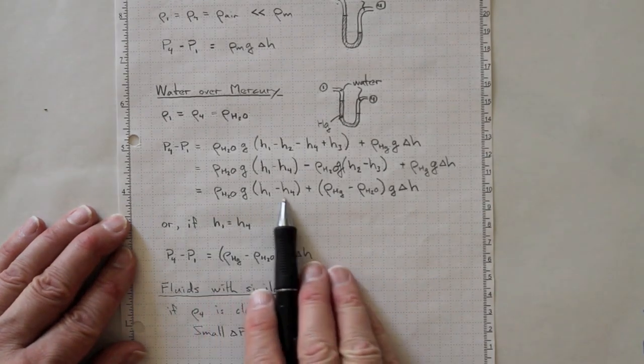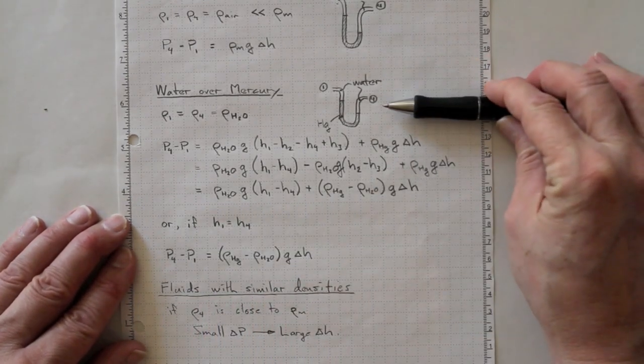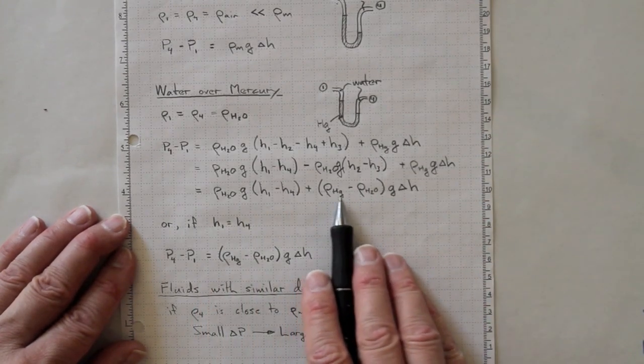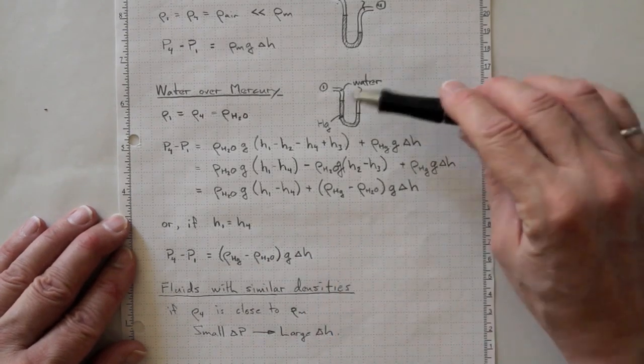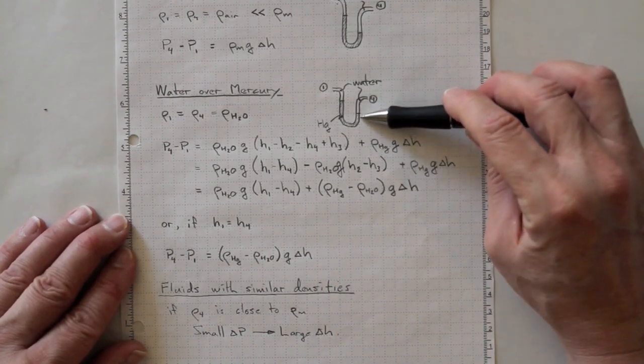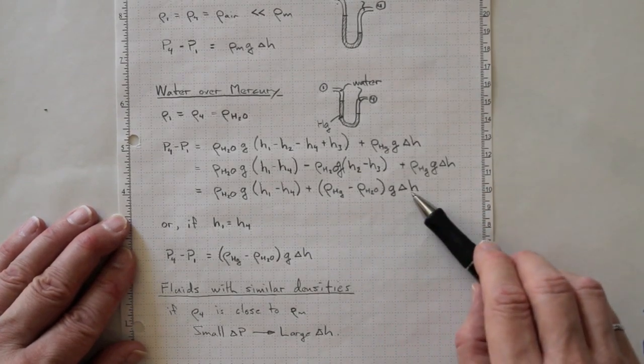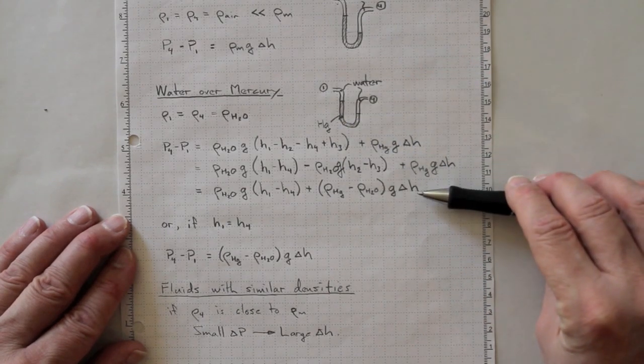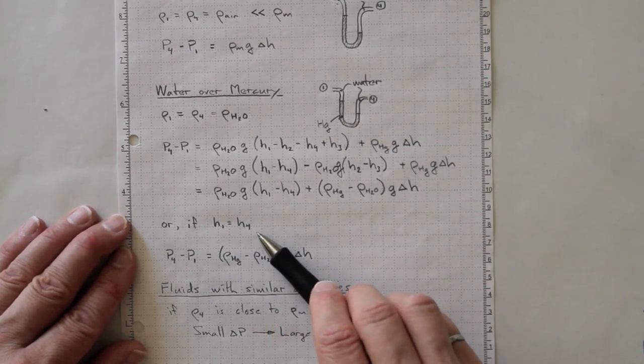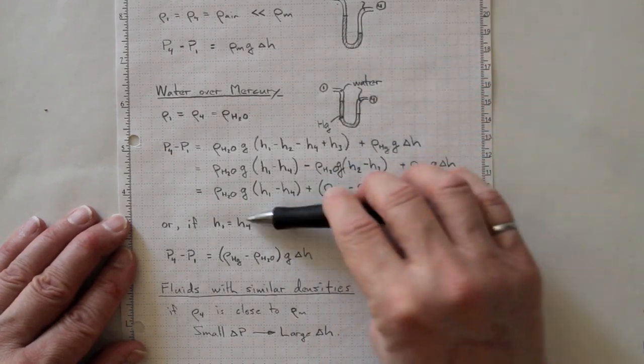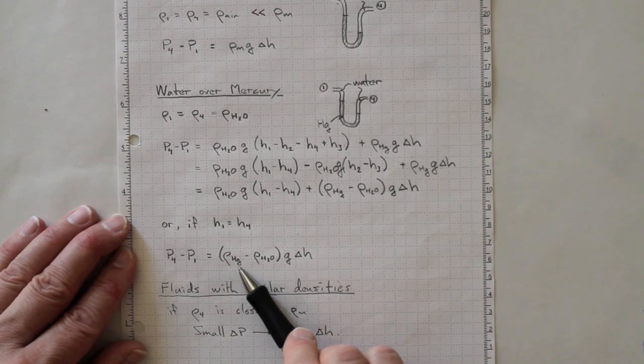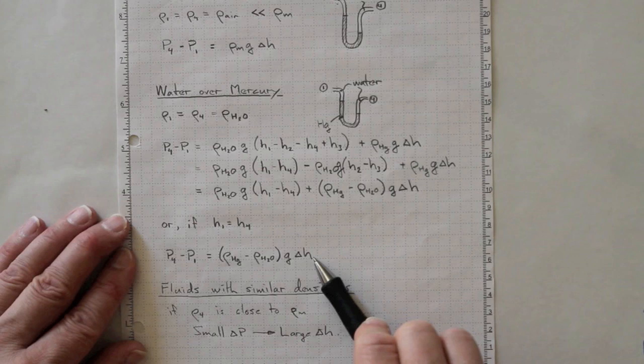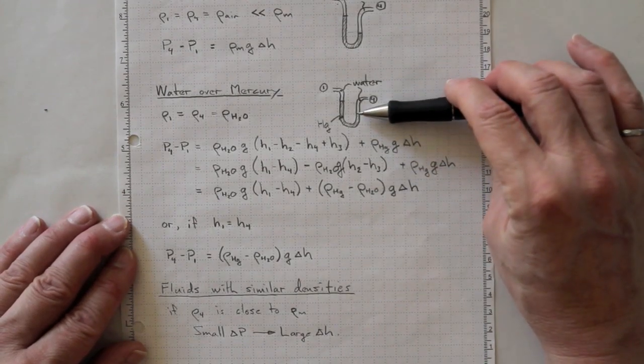Thus, we'll have a difference in pressure due to the fact that one and four are at different elevations, and we'll have a difference in pressure due to the fact that mercury and water have very different densities over this delta H. So the difference in densities times delta H gives us the difference in pressures between the two. And if H1 is equal to H4, if the elevations for these two are the same, then P4 minus P1 will just be rho Hg minus rho H2O g delta H. So the delta H depends on the difference in densities.